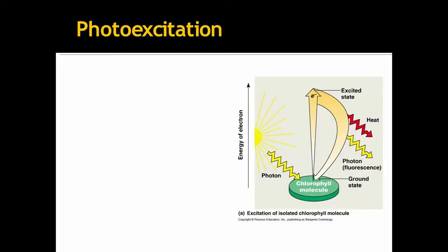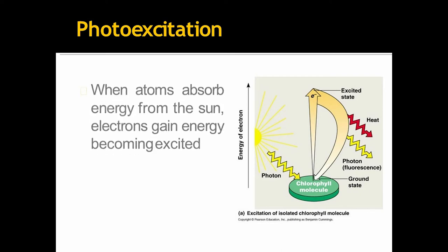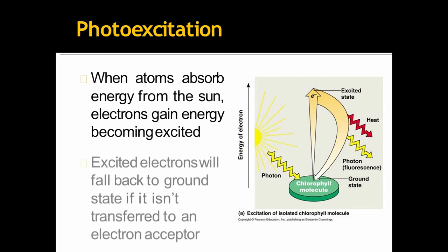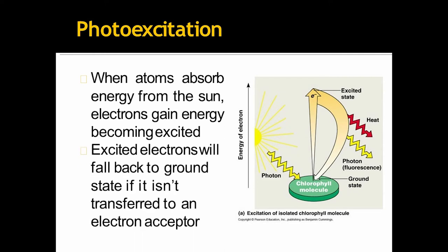Now, the first one, photoexcitation. When atoms absorb energy from the sun, electrons gain energy becoming excited. Excited electrons will fall back to ground state if it isn't transferred to an electron acceptor.